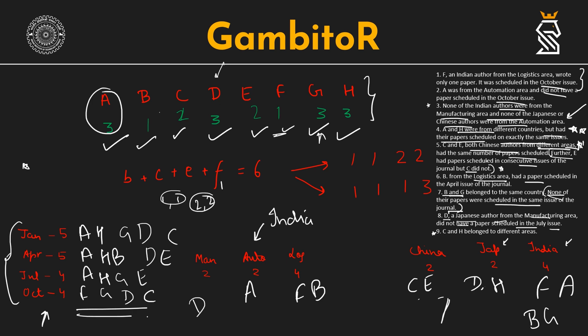The country table is now also complete. For the area table: C and E are from different areas and cannot be from automation since no Japanese or Chinese authors are from automation. Therefore C is from manufacturing and H is from logistics. G is the remaining author and will be from automation. This completes the full table, and we can now easily answer all five questions using this data.